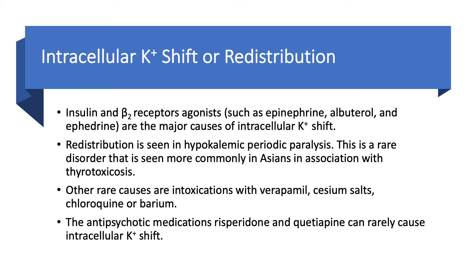Number two: intracellular potassium shift or redistribution. The most common causes are related to insulin, especially IV insulin — like someone on a protocol for diabetic ketoacidosis — where you will see hypokalemia. This is why we include potassium in the fluids. Beta-2 receptor agonists, such as giving a lot of breathing treatments with albuterol, can also cause this, as can epinephrine or ephedrine.